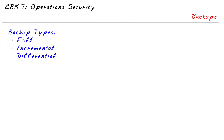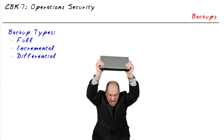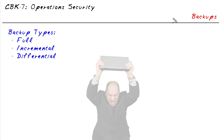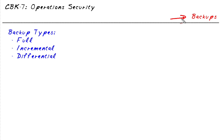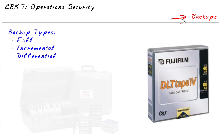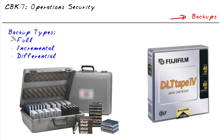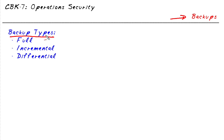Someone once told me, 'Hey Keith, there's only two types of people in the world, and they are people who have lost data and people who will lose data.' Because we all know that data has the potential to be lost, we definitely want to have backups of virtually everything. In a traditional computing environment where maybe we're backing up to digital tape, there are three basic backup types I'd like to chat with you about.